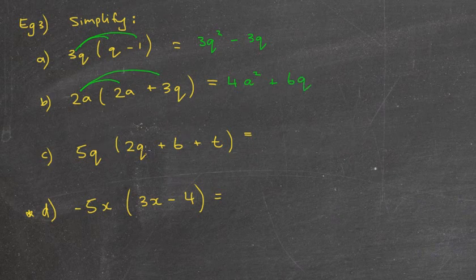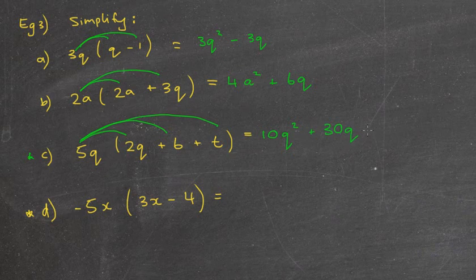Now this one looks more challenging, I guess, but it's not actually. It's just got one extra number in the brackets. So 5q times 2q, well 5 times 2 is 10q times q is q squared. 5q times 6 is, 5, 6 is 30q. And 5q times t is going to be 5qt. That's it.